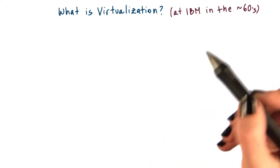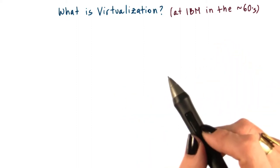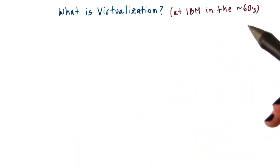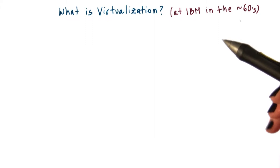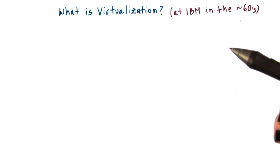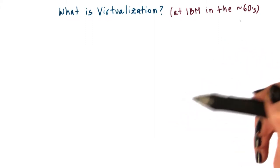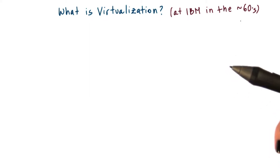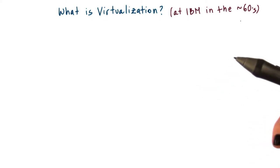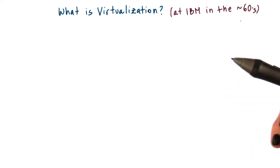Virtualization is an old idea. It originated in the 60s at IBM, when the norm of computing was that there were a few large mainframe computers that were shared by many users and many business services.